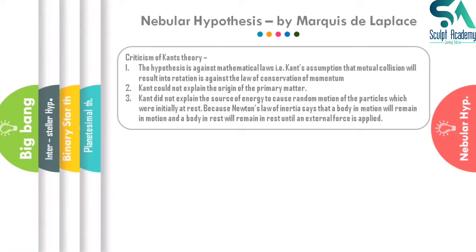Second, Kant could not explain the origin of primary matter — he simply presumed it was supernaturally created. Third, Kant did not explain the source of energy to cause random movement. He stated that hard particles randomly moved and were attracted toward each other, but could not explain what initiated this random movement, given that if forces were balanced in the new universe, movement could not happen.